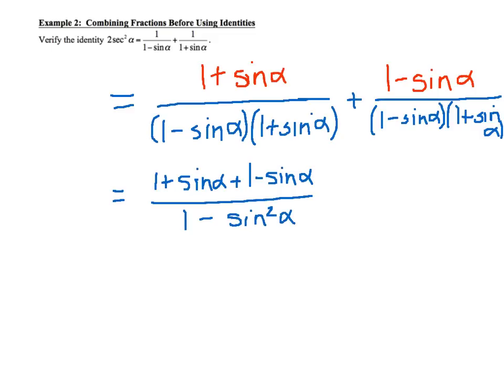And then on the bottom, we have 1 minus sine squared alpha. So on top, what happens is we can cancel out your positive sine of alpha and your negative sine of alpha. And you get just a 2 on the top.